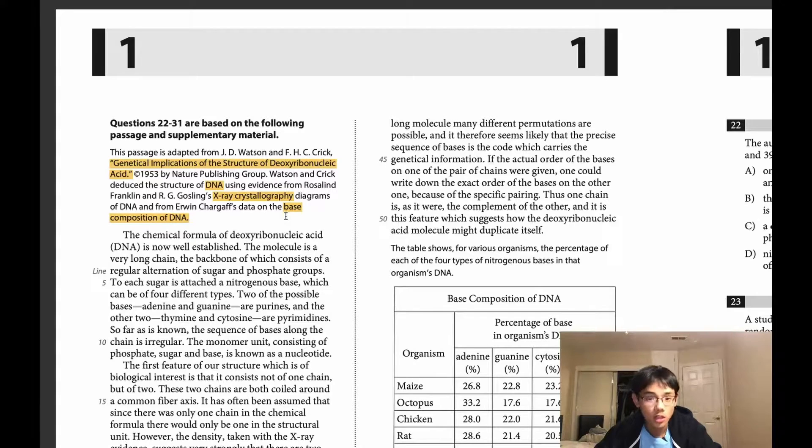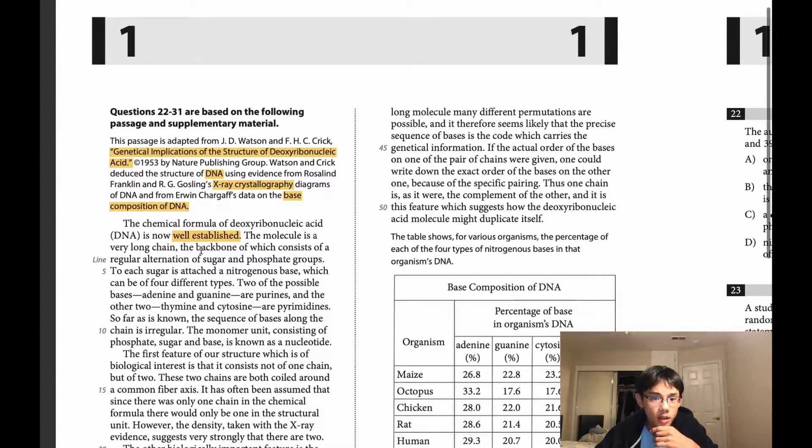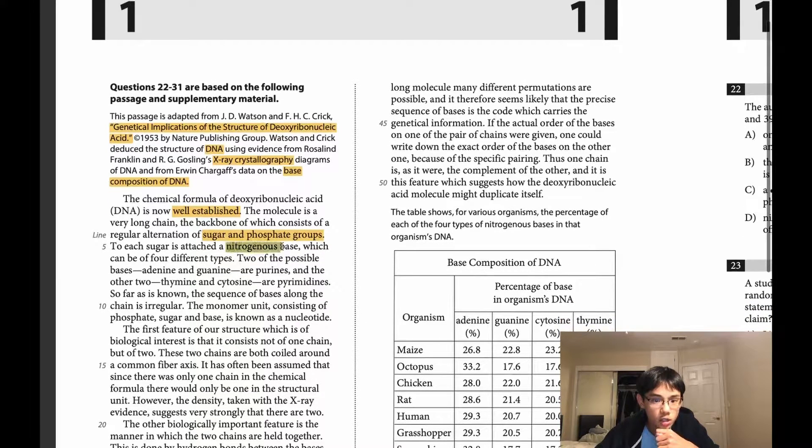The chemical formula of deoxyribonucleic acid, DNA, is now well established. This is one of the main ideas that we talked about, this scientific discovery. They're saying at the beginning of the passage that the chemical formula, the molecular basis of DNA is now well established. So that's a main idea of this passage. The molecule is a very long chain, the backbone of which consists of a regular alternation of sugar and phosphate groups. To each sugar is attached a nitrogenous base, which can be of four different types.